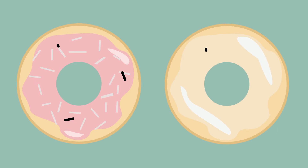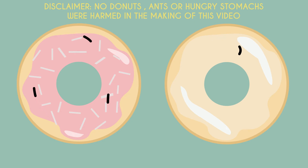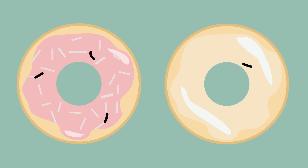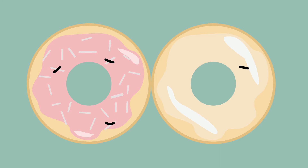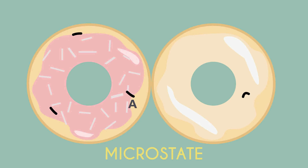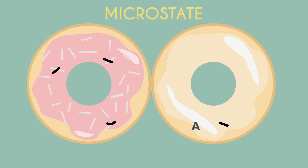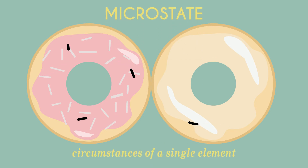The frosted has three ants — A, B, C — while the glazed has D all alone. Now if we push them together, they'll be in contact and the ants can move between the donuts. This is known as a microstate. Ant A on the frosted is one microstate, while Ant A on the glazed is another. With microstates, we're talking about the circumstances of a single element.